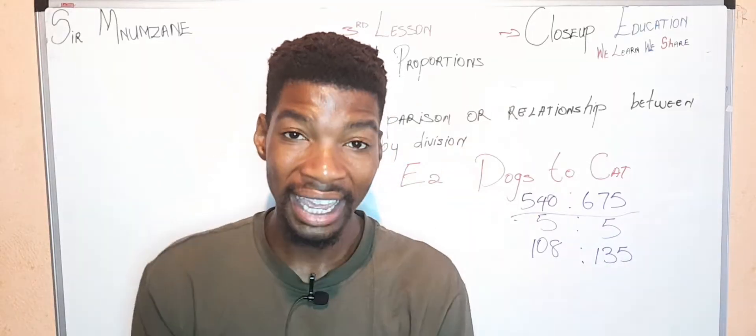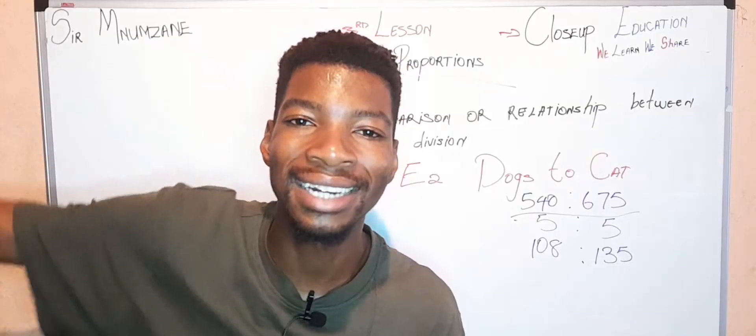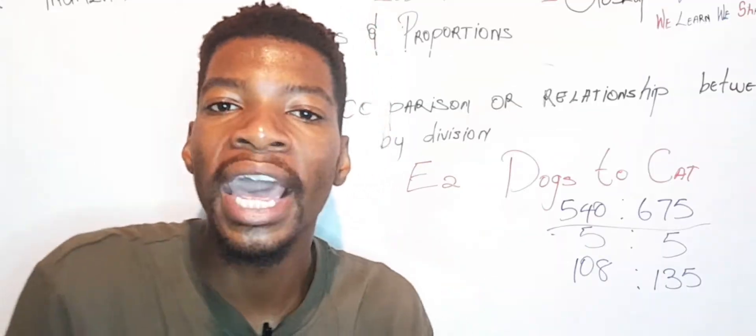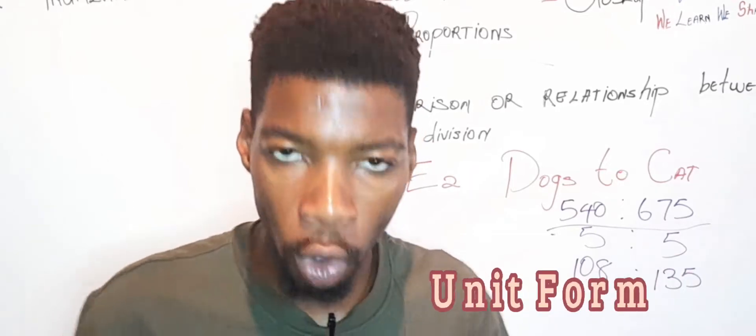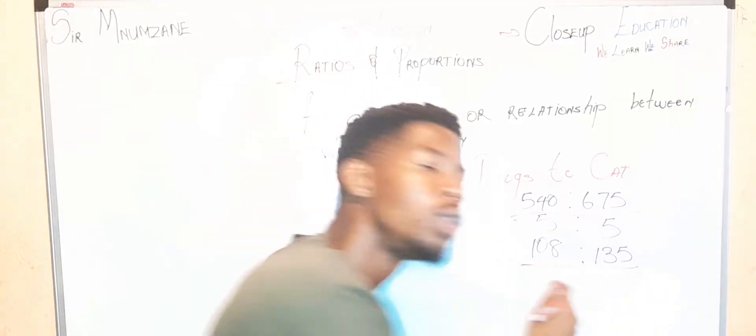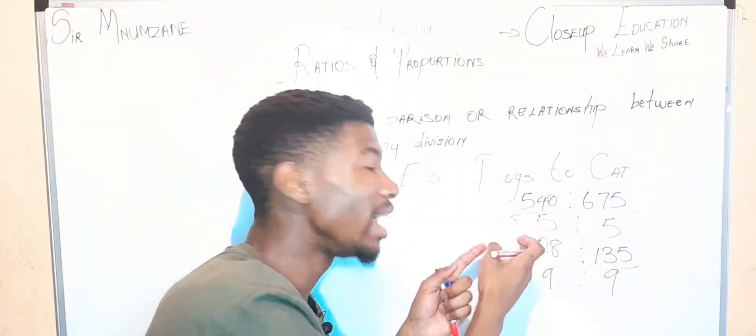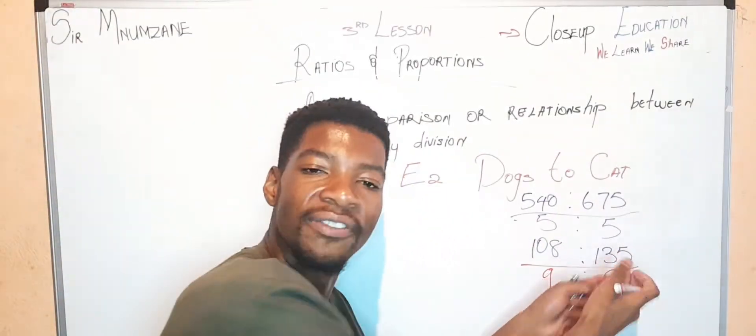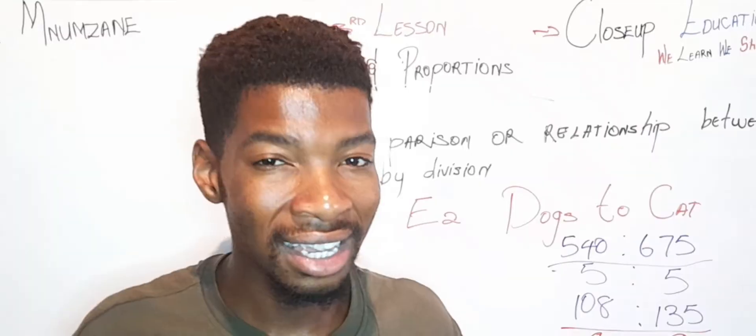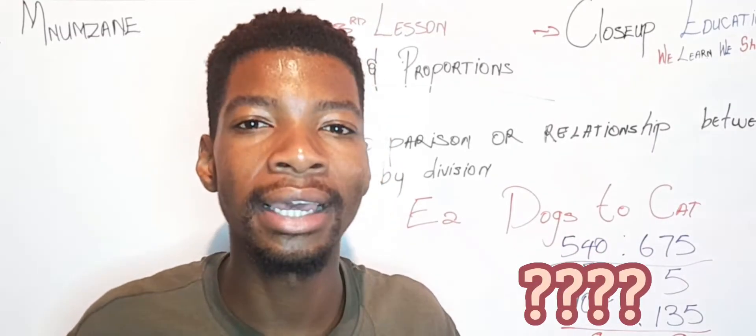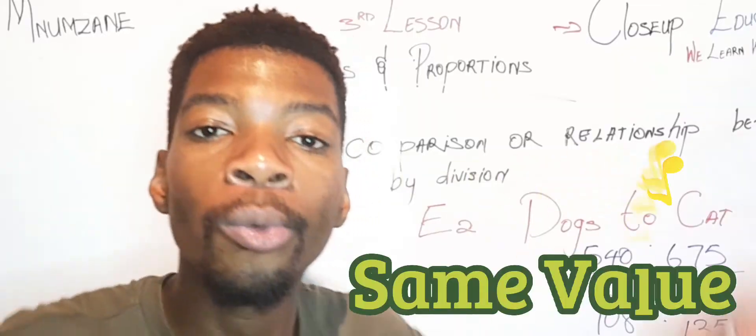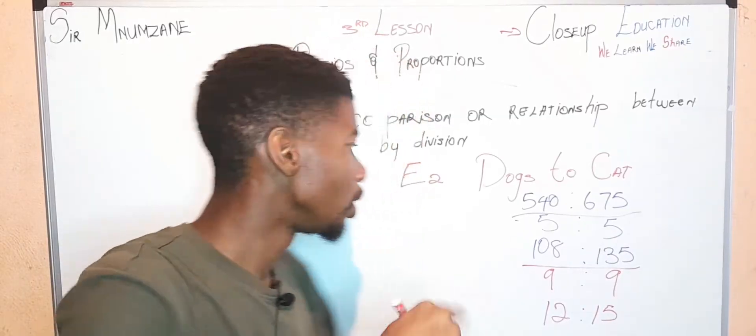Now we have 108:135. That's not simplified enough. We have to continue and dig deeper. The trick is you must first start by dividing by 2, 3, 4, 5, 6, etc. to see if the answer gives you a whole number without decimals. What number will we use here? 9 is the number. So 108 divided by 9 is 12, and 135 divided by 9 is 15.